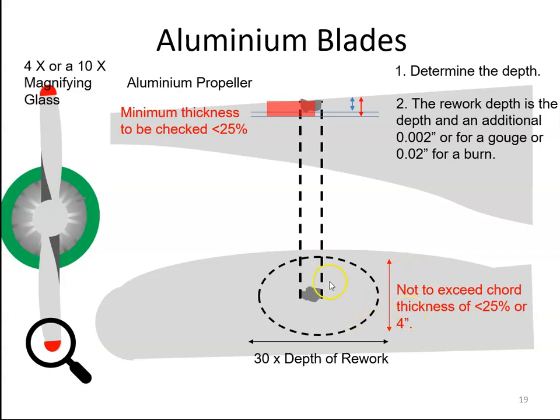Once we're happy with all that, we get our files and we file out this area and it becomes like a dish. High area here going down to the lower area and back up to the high area. So just to recap, if we're going to blend it out along the leading edge, it's 10 times. And if it's on the face or blade back, it's 30 times the rework depth.